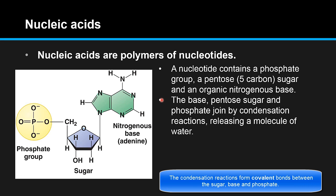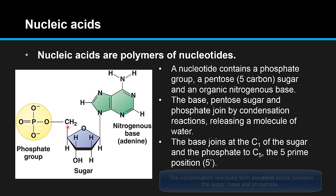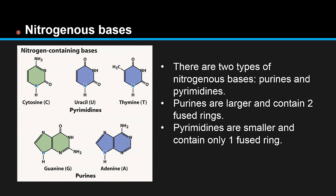The base, pentose sugar, and phosphate group join by condensation reactions, releasing a molecule of water. The base joins at C1, that's carbon 1 of the sugar, and the phosphate joins at carbon 5, which is known as the 5' position. So the base joins at the C1 carbon, shown here, and the phosphate group joins at the 5' position at carbon number 5, shown here.